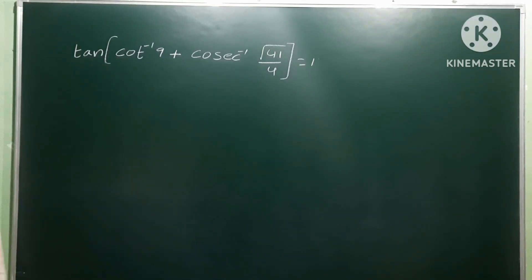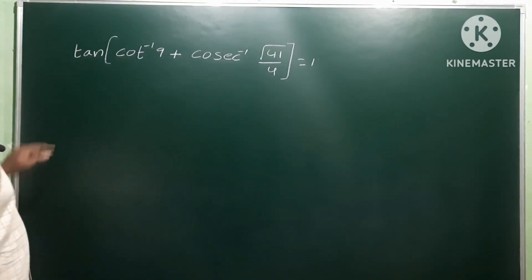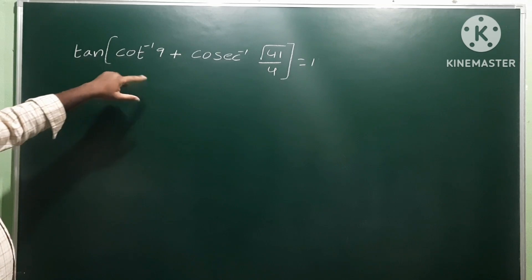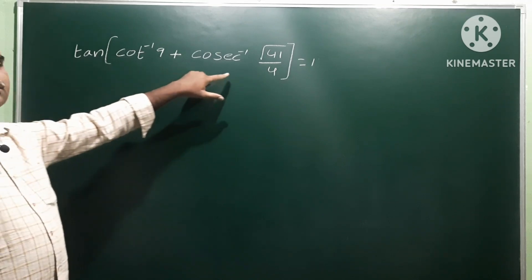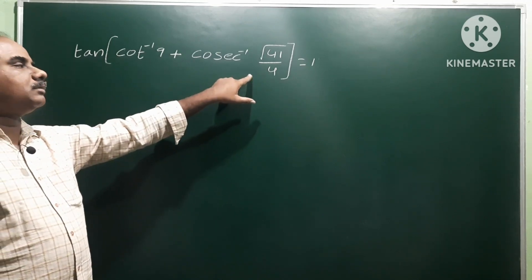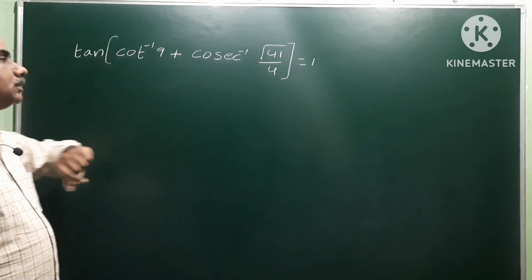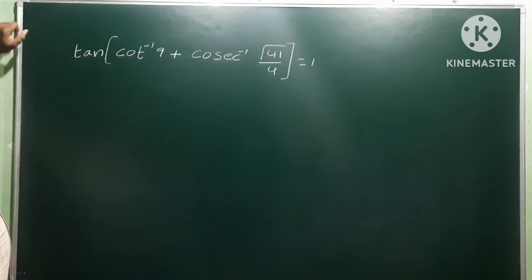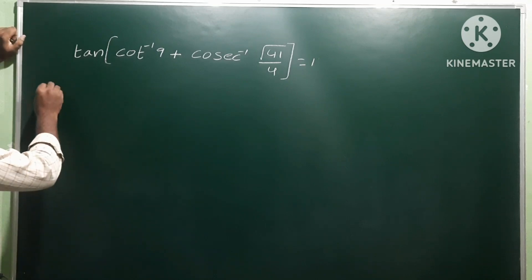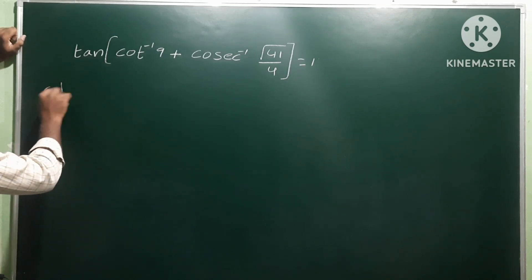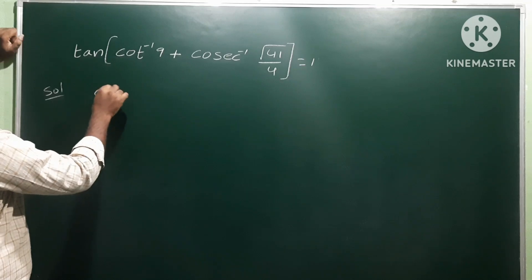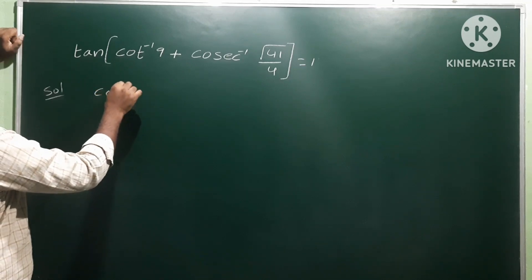The next problem: tan of (cot⁻¹(9) + cosec⁻¹(√41/4)). We have to prove this value is equal to 1. So let us see the solution. Let us take cot⁻¹(9) as a.